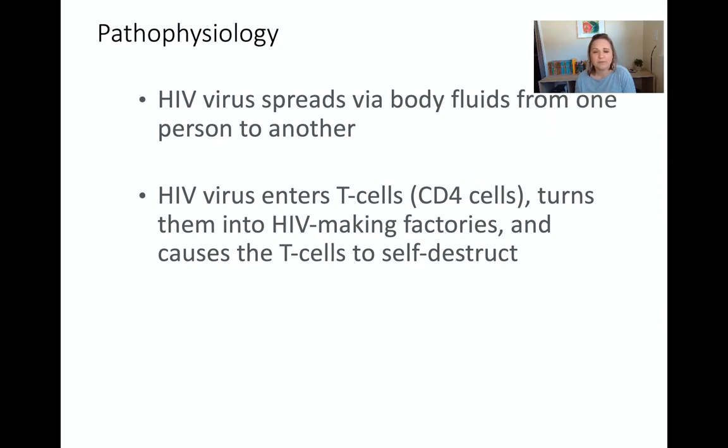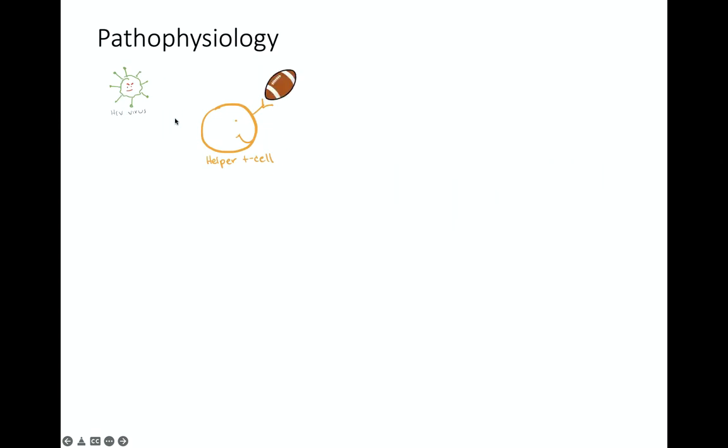Here we've got our HIV virus and our helper T cell, also known as the CD4 cell. Our helper T cell is the quarterback of our immune system — the part that calls the shots, telling all the other T cells and B cells what to do. We need a quarterback to call the plays for our immune system when we have foreign invaders. These quarterbacks are the target of the HIV virus.